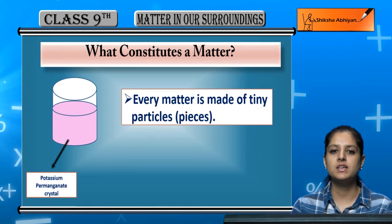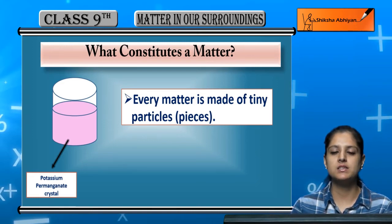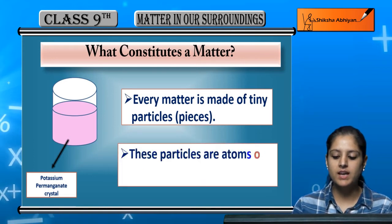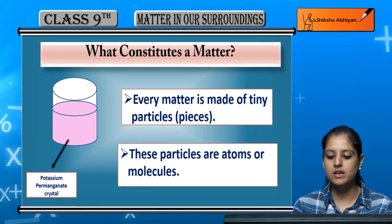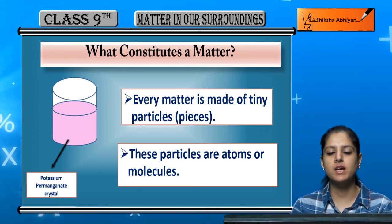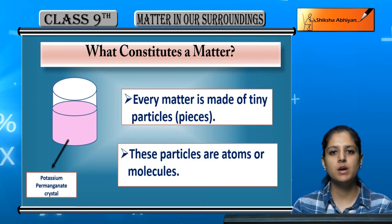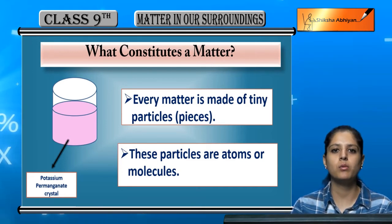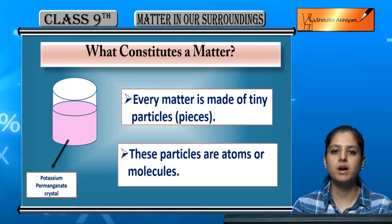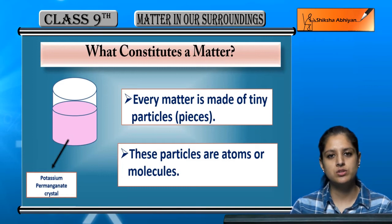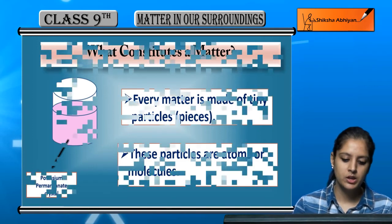So these particles are tiny particles which make up matter. We call these particles atoms or molecules. These particles are called atoms and molecules. Atoms or molecules are what matter is made up of. These particles are very small. So what constitutes matter? Tiny particles constitute matter.